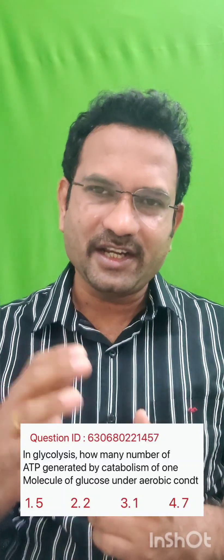Some of you may think 8 ATP is correct — that is wrong. 8 ATP comes from old literature where one NADH was counted as 3 ATP, giving 6 ATP from two NADH plus 2 ATP from substrate-level phosphorylation, totaling 8 ATP. But according to new research and standard books, one NADH gives 2.5 ATP, so 7 ATP is correct. Raising an objection on this question is of no use, because the answer is clearly 7 ATP.